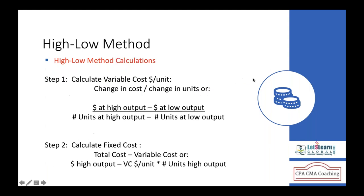What would be the total cost for a forecasted activity level? We understand this with a calculation. The steps used in the high-low method: Step 1 — we calculate variable cost per unit. The formula used to find variable cost per unit is the change in the total cost divided by the change in the units.